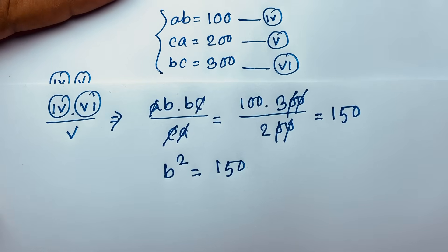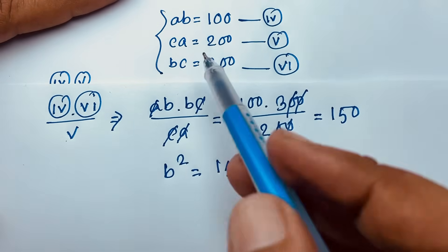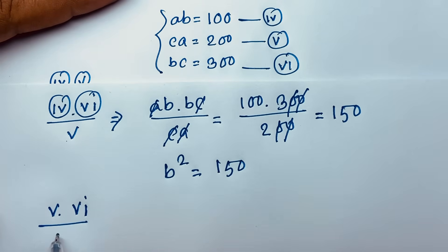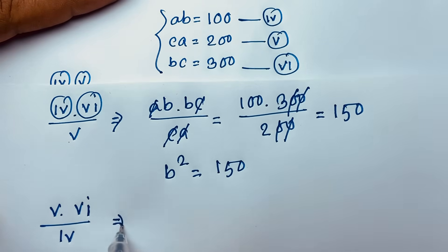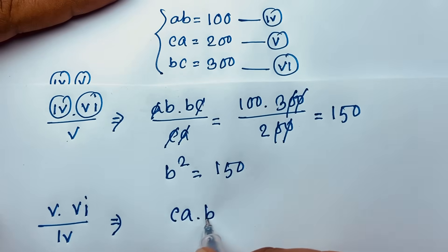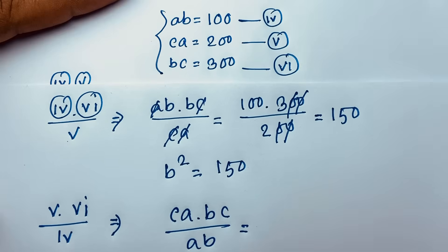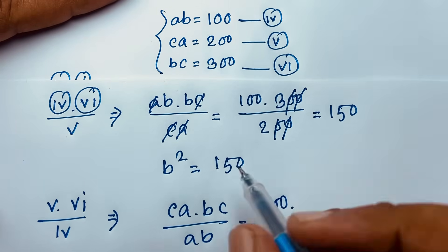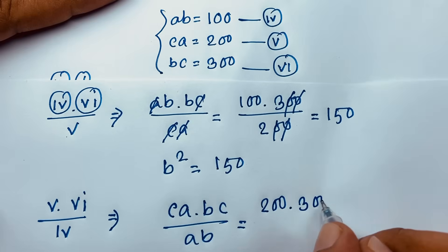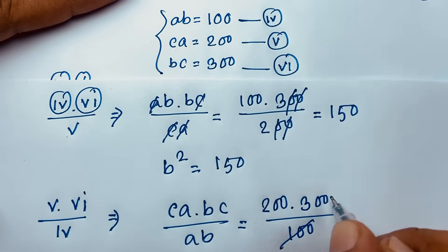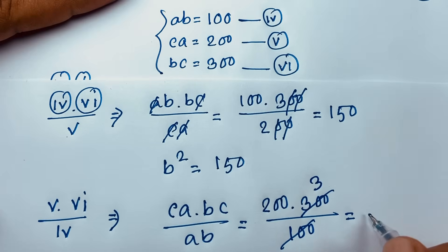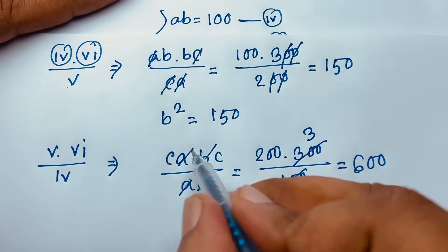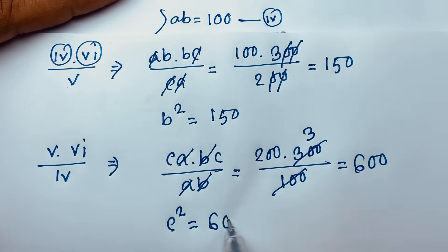Now I multiply equation 5 times equation 6 and divide by equation 4: (ca × bc) / ab = (200 × 300) / 100. The a's cancel, the b's cancel. 300 divided by 100 is 3, times 200 is 600. So c² = 600.